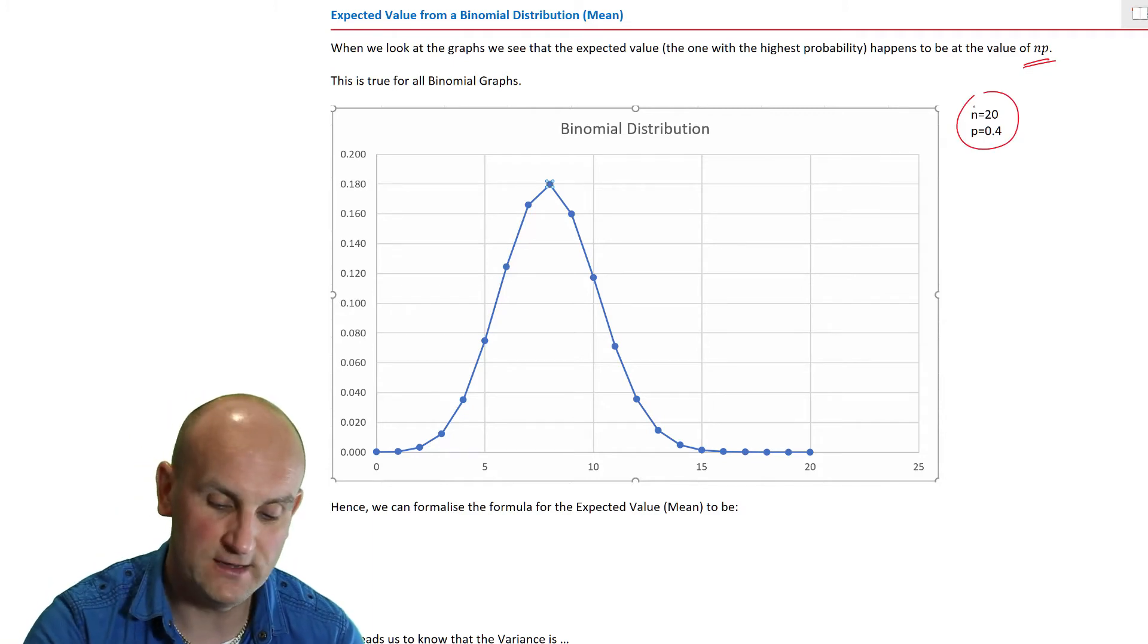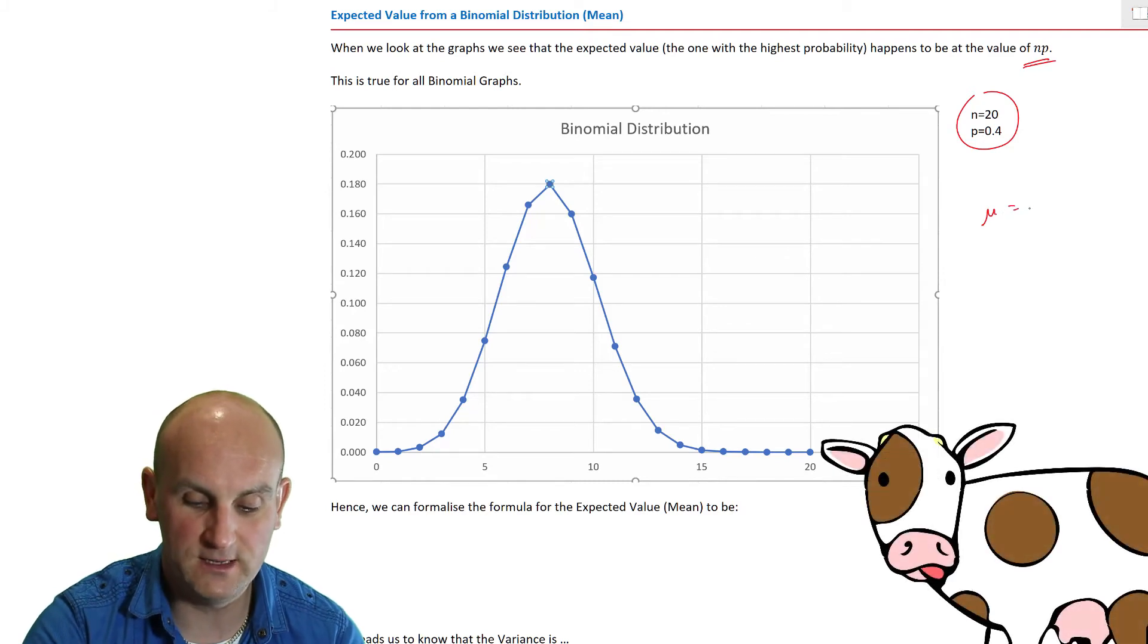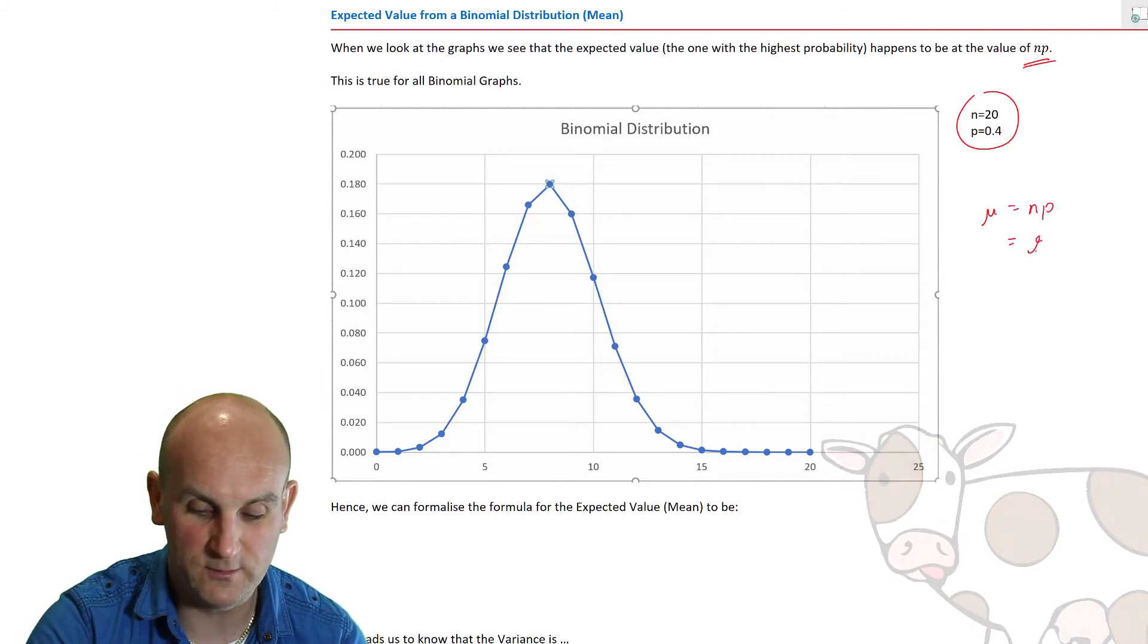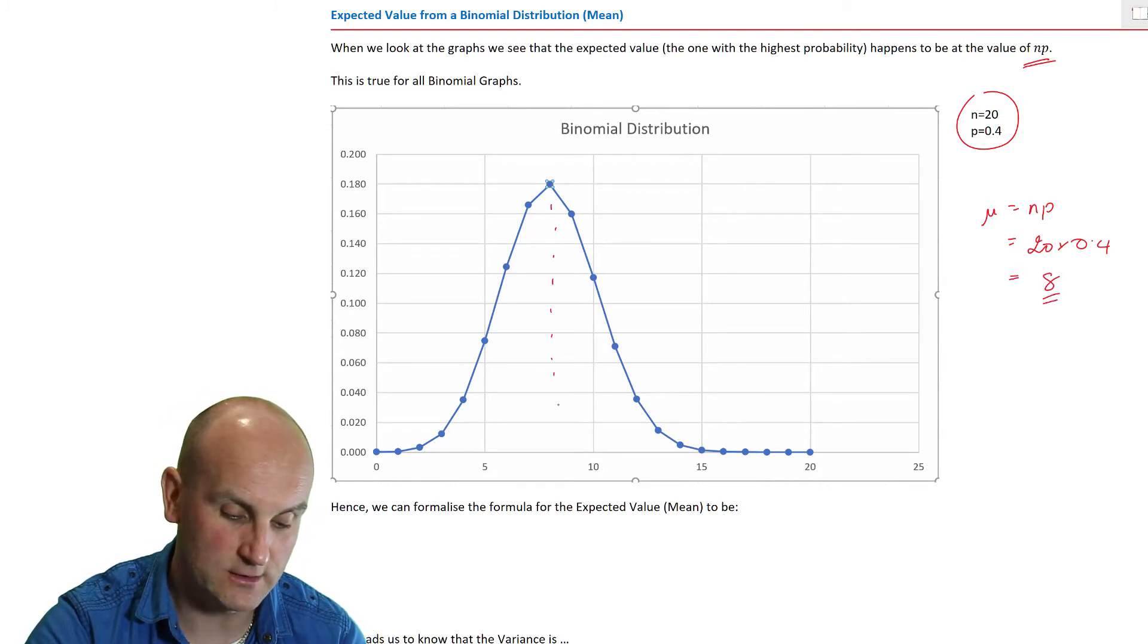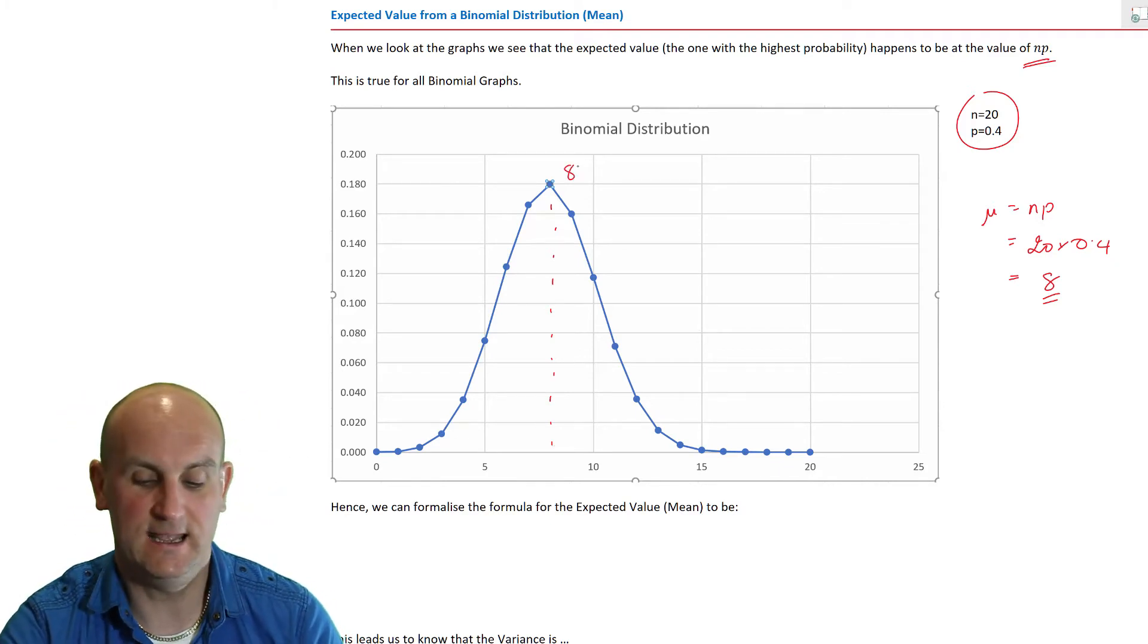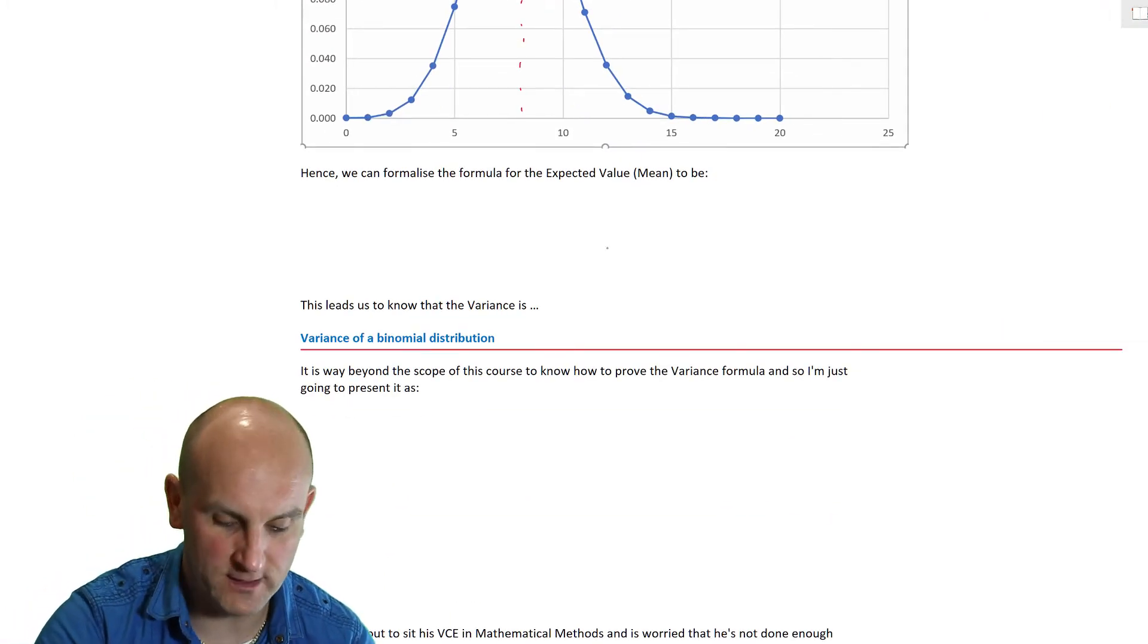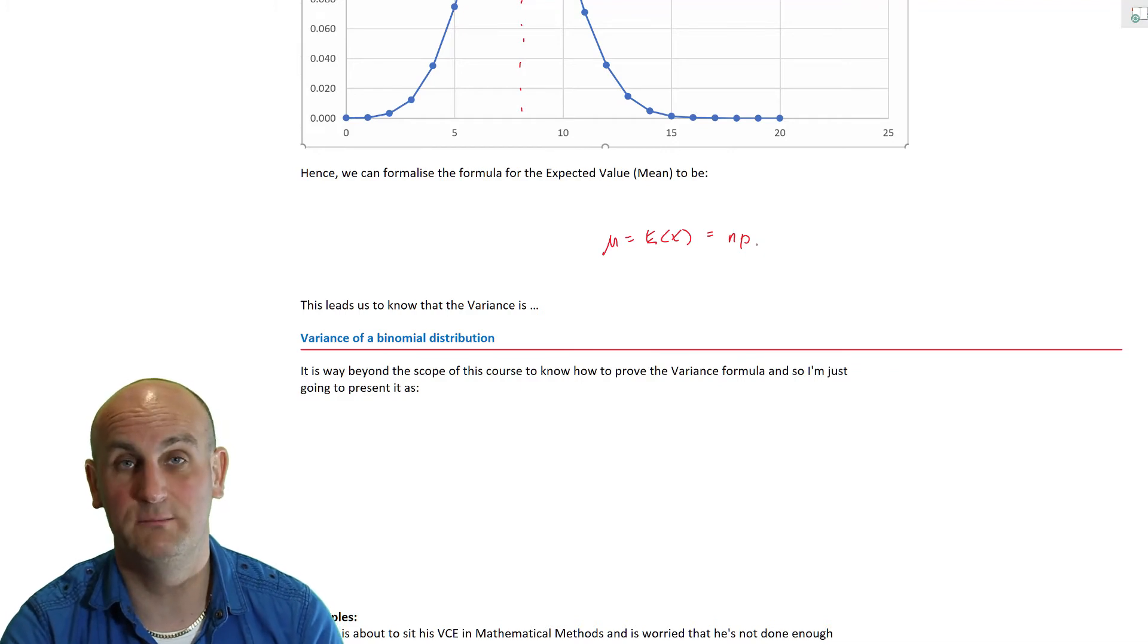If I go back here, 10 times 0.1 happens to be 1 and 10 times 0.3 happens to be 3. Ladies and gentlemen, what we've just worked out is if we look at the graph, the highest value, the most expected value happens to be the value of N times P multiplied together. Here we've got an N of 20 and a P of 0.4 which would suggest that my expected value mu happens to be N times P which is 20 times 0.4 and that would be 8. So let's formalize this as mu, which is the expectation of X, happens to be N times P. Really important that you remember that. That's for a binomial distribution.